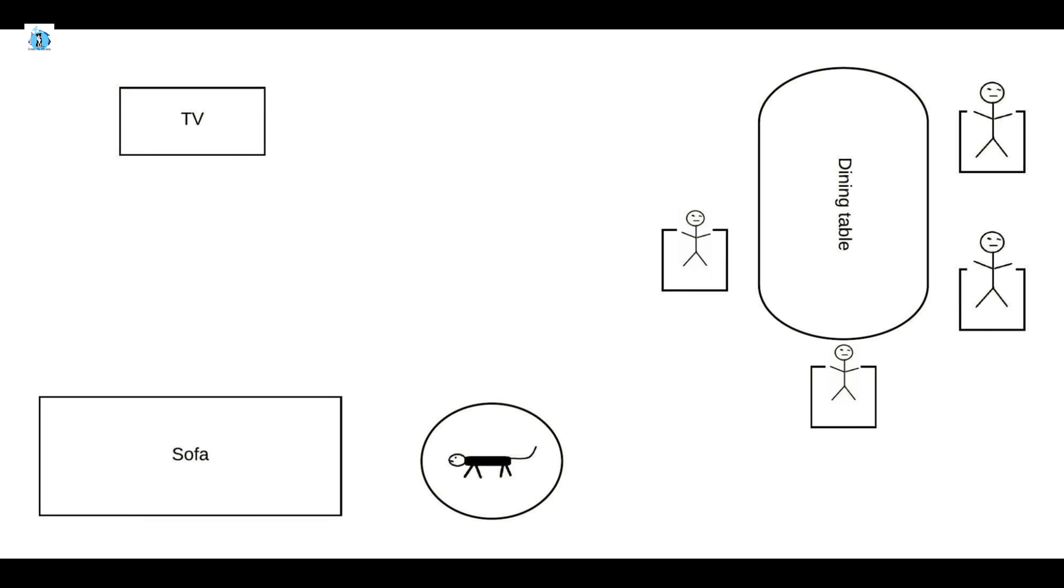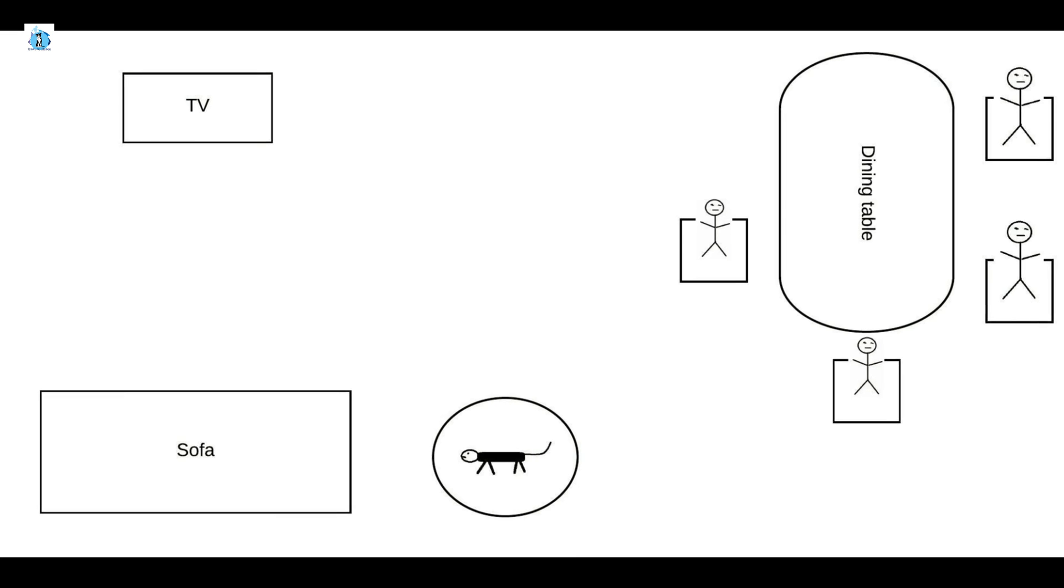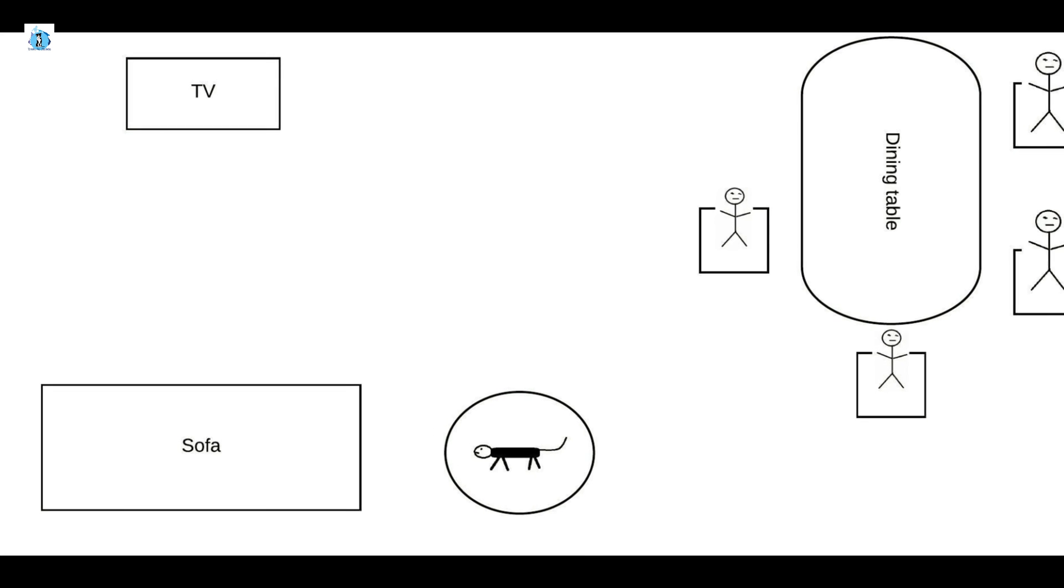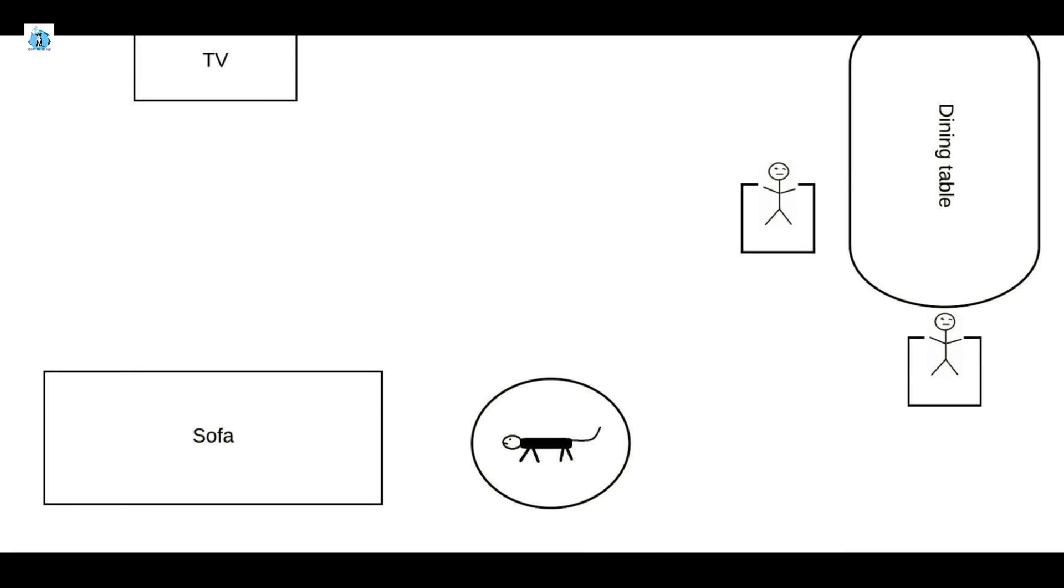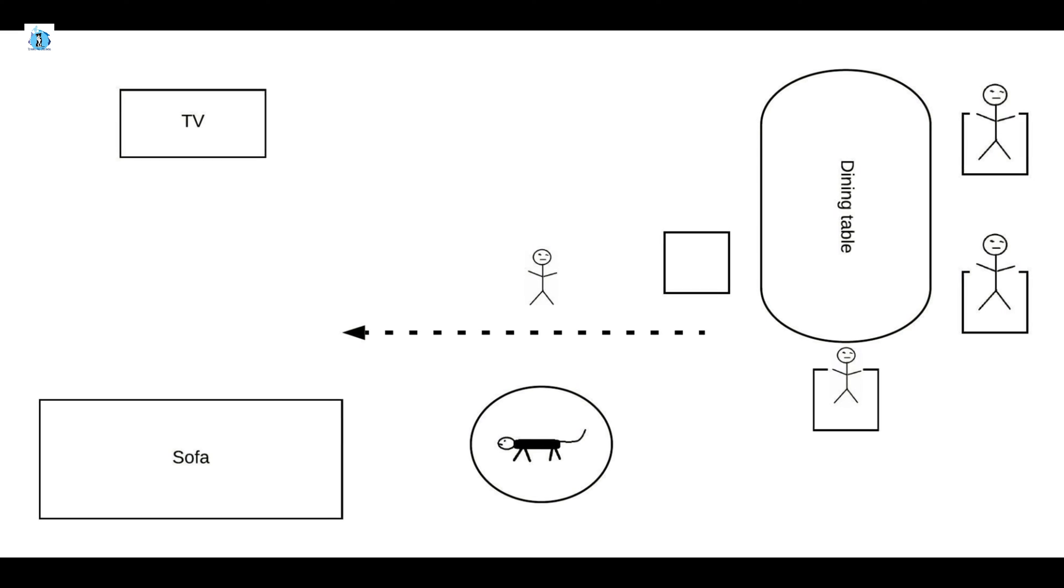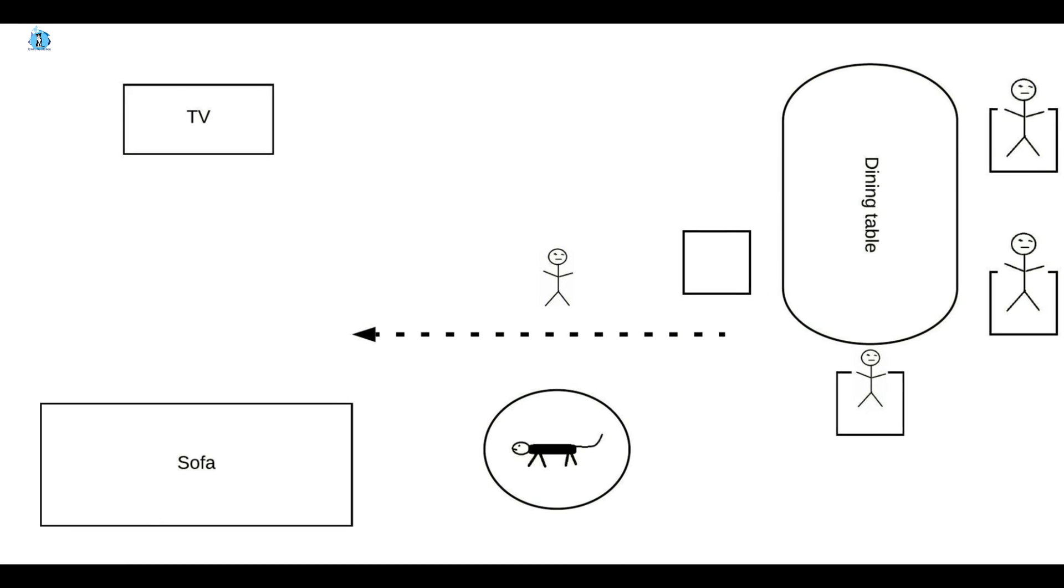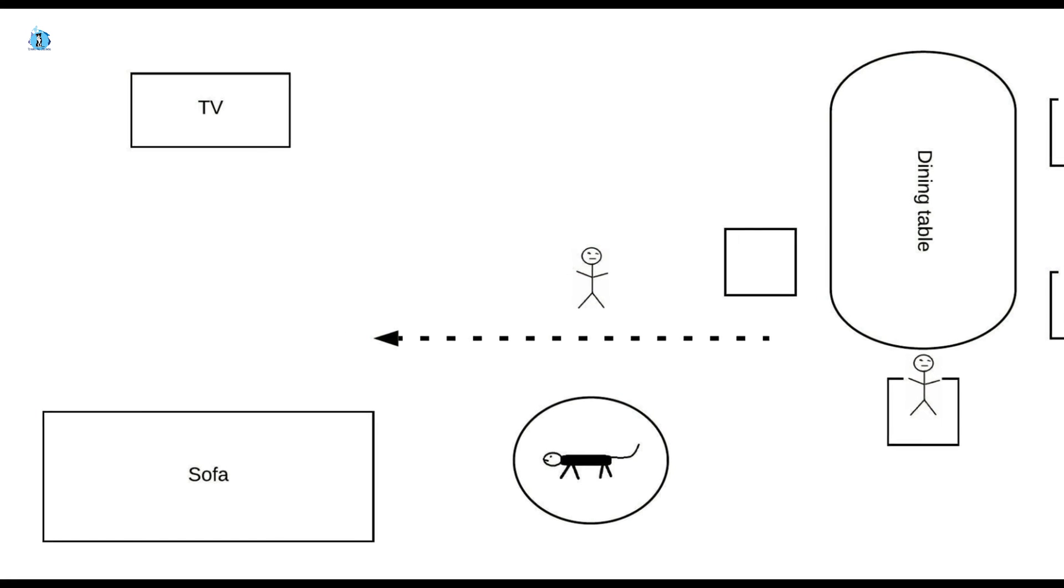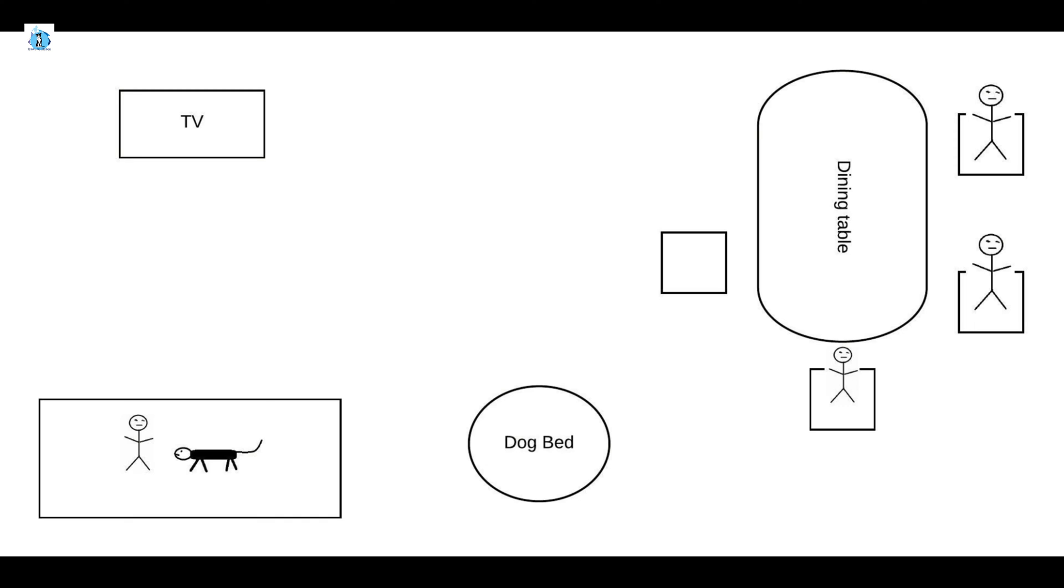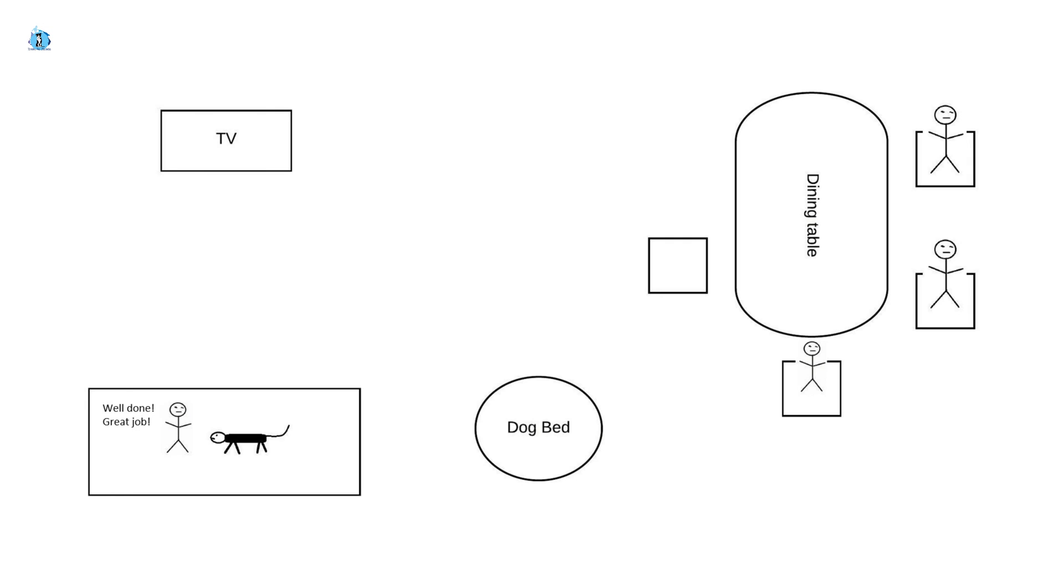Now, to make things more interesting, let's pretend that for some reason we really need a dog bed to be located in the initial location. One possibility here would be that we would have the child walking slowly in front of the dog. The dog then follows the child to the sofa. And finally, the child praises the dog for its behavior.